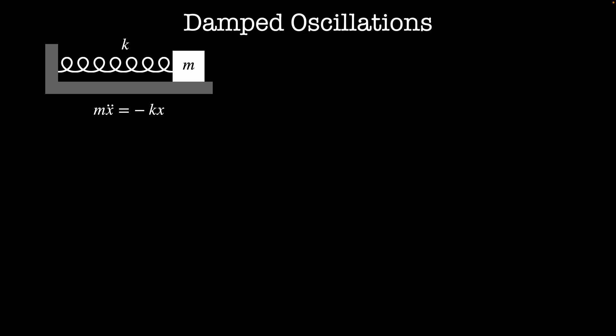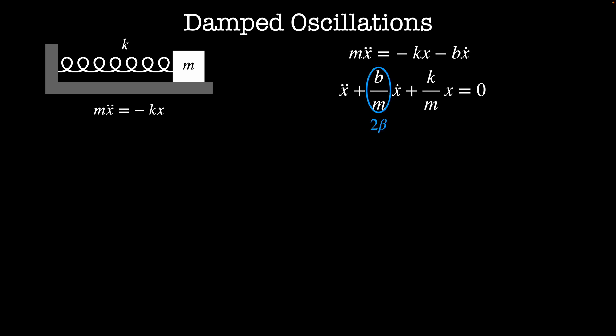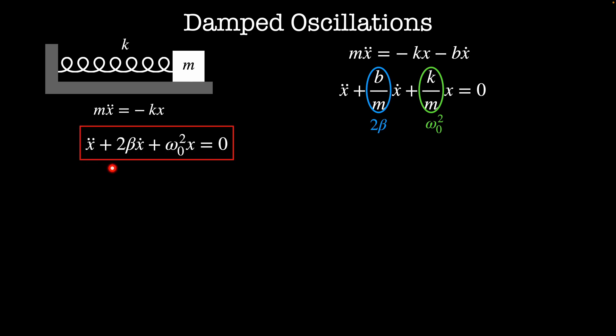Now that we understand simple oscillators, let's add in a damping term. This acts like a drag force on our object. The equation of motion becomes m·ẍ = -kx - b·ẋ. Dividing through by m, I'll define b/m = 2β, the damping coefficient, which measures the amount of drag on a system of mass m, and k/m = ω₀², the natural frequency of the system. Our equation of motion then becomes ẍ + 2β·ẋ + ω₀²·x = 0.